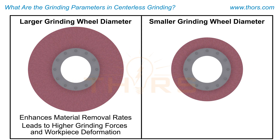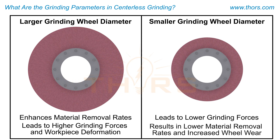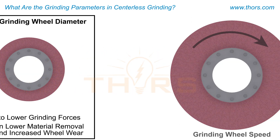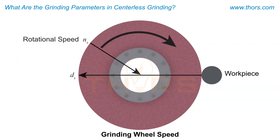A smaller grinding wheel diameter can lead to lower grinding forces but results in lower material removal rates and increased wheel wear. The grinding wheel speed is given either as rotational speed, or NS,